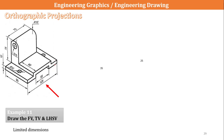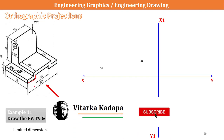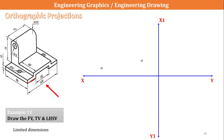For this one, the first thing is I have to draw the X-Y and X1-Y1 reference lines. From the isometric view I can see this entire part. The total length is 125, and 125 minus 55 gives a length of 70.